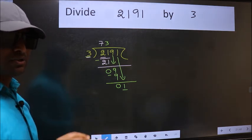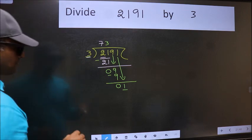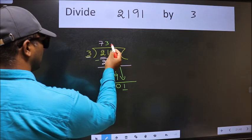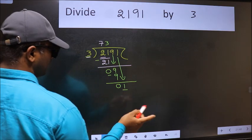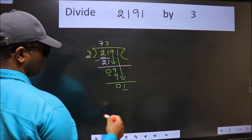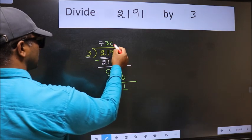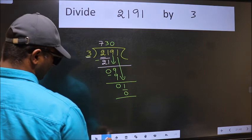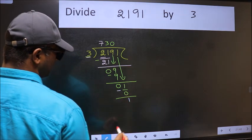Instead of that, what you should think of doing is, which number should we take here? If I take 1, we will get 3. But 3 is larger than 1. So what we should do is, we should take 0. So 3 into 0 is 0. Now we should subtract. We get 1.